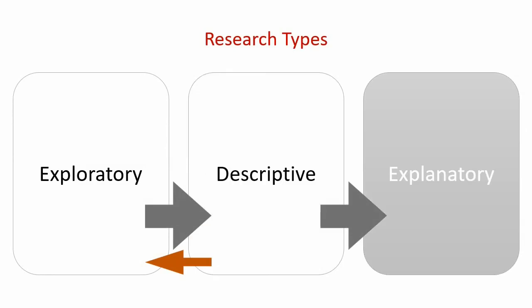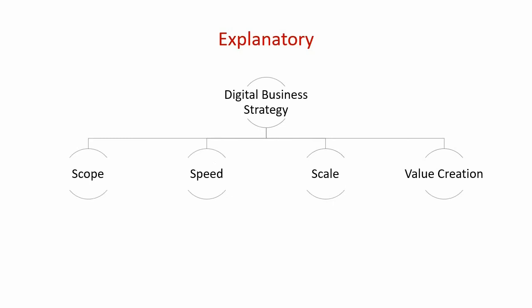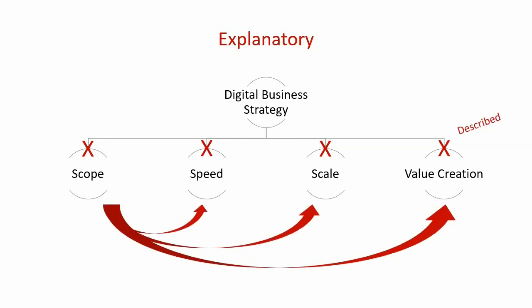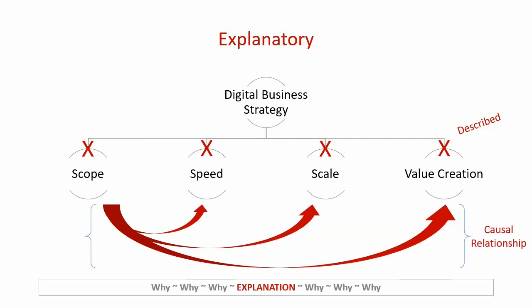Now let's focus on explanatory research. Explanatory research aims to offer the researcher a platform to explain the causes of a phenomenon or to explain the phenomenon itself. In order to do that, in an explanatory study, your research question may start with the word 'why.' You are trying to explain why things are the way they are, how they work. Going back to our example, we have identified where X marks the spot, we've described the spot, and now we need to explain the spot. In the exploratory research, we identified that scope, scale, speed, and value creation of the DBS should be investigated. In the descriptive study, we described the scope, scale, speed, and value creation of the DBS, and described the relationships between the variables. But it is very important to know that describing that there is a relationship does not mean you are explaining why the relationship exists. This is where the explanatory study comes in — we are explaining the causal relationships between scope, scale, speed, and value creation, and we may very well be explaining the DBS itself.